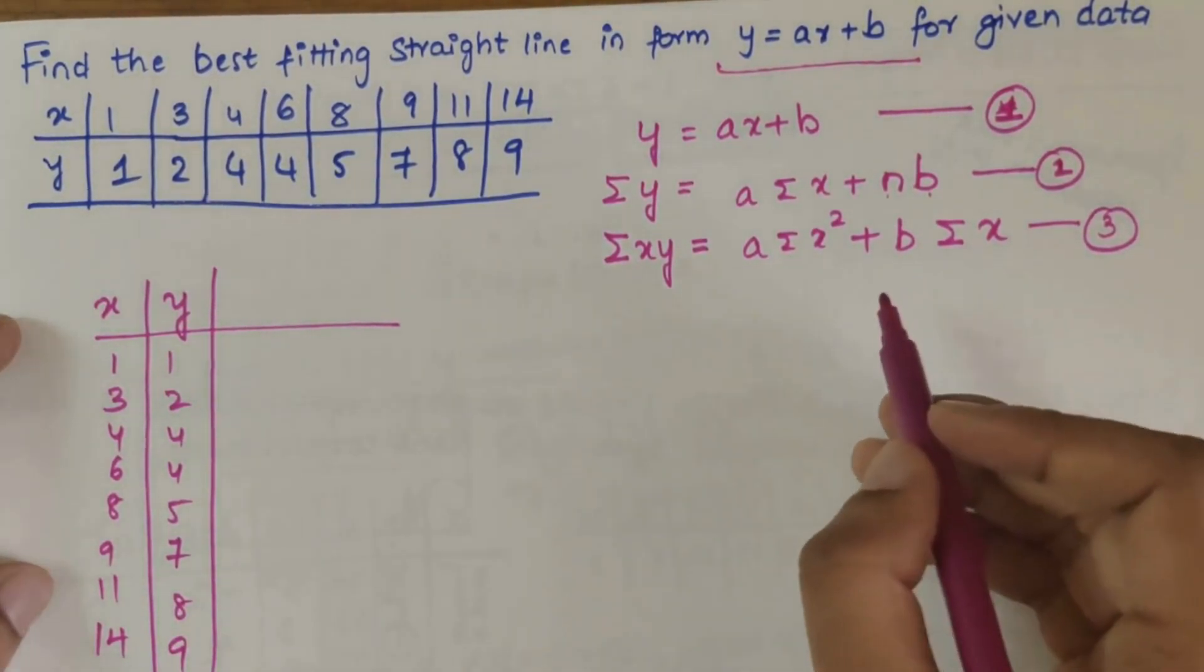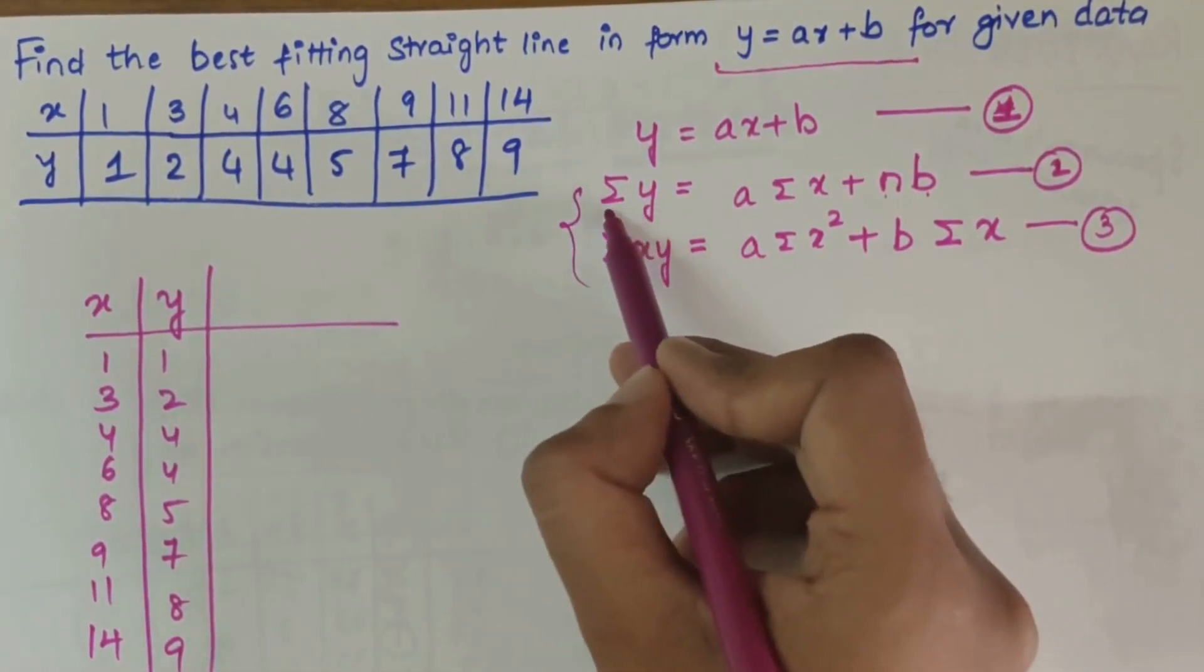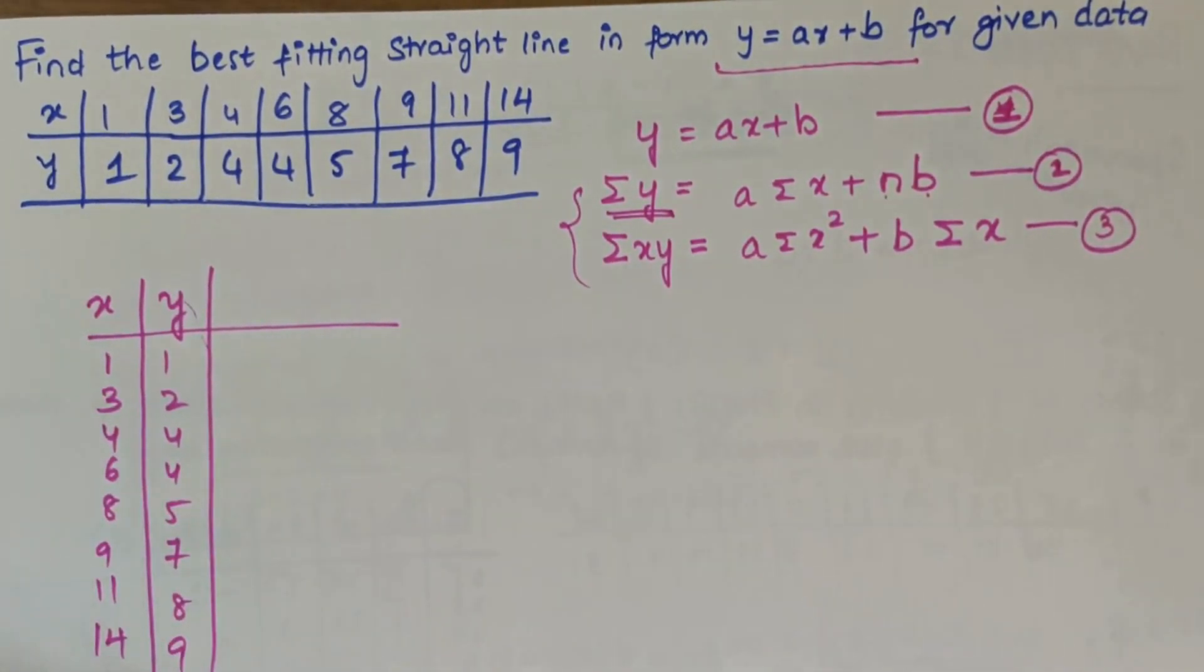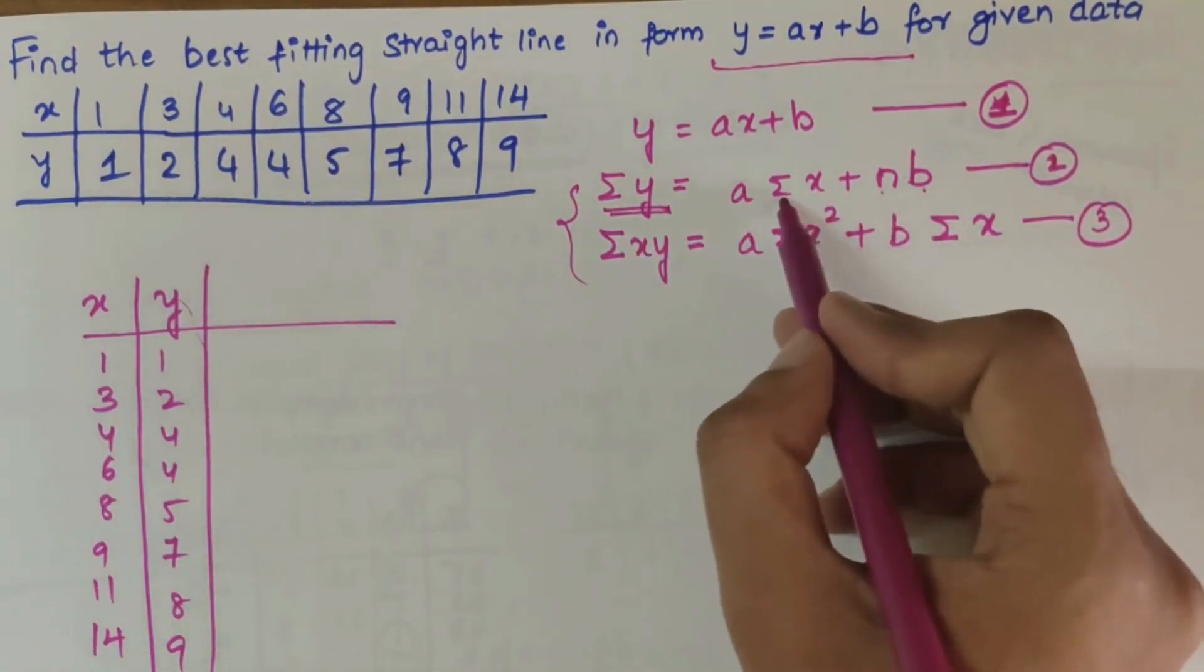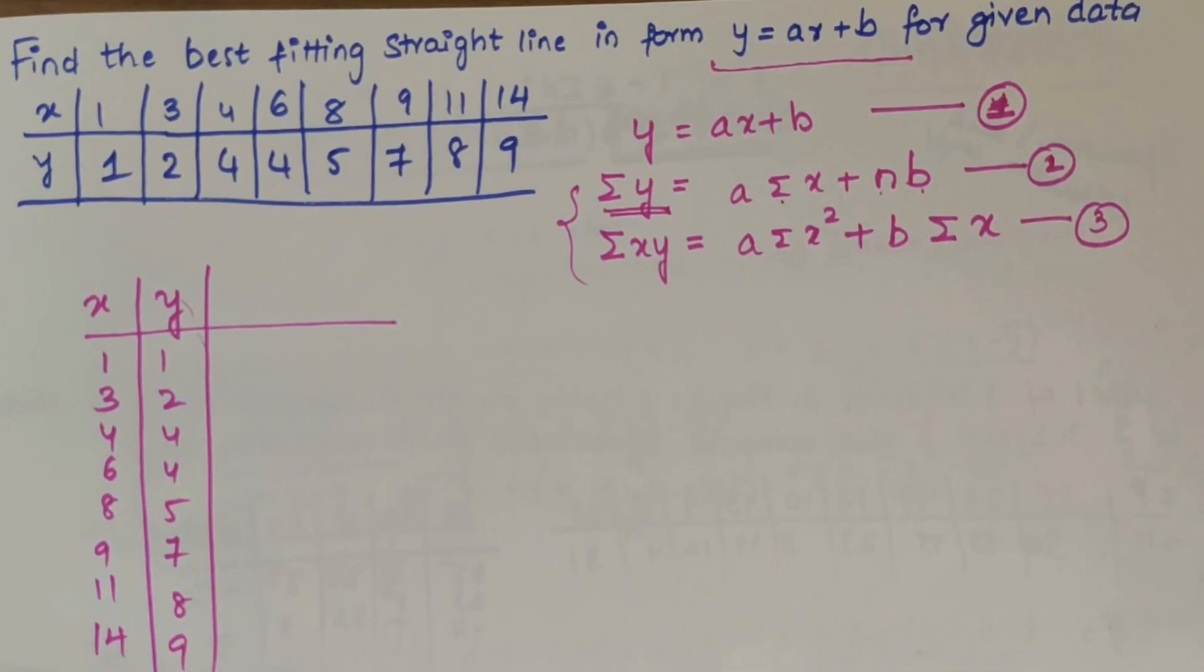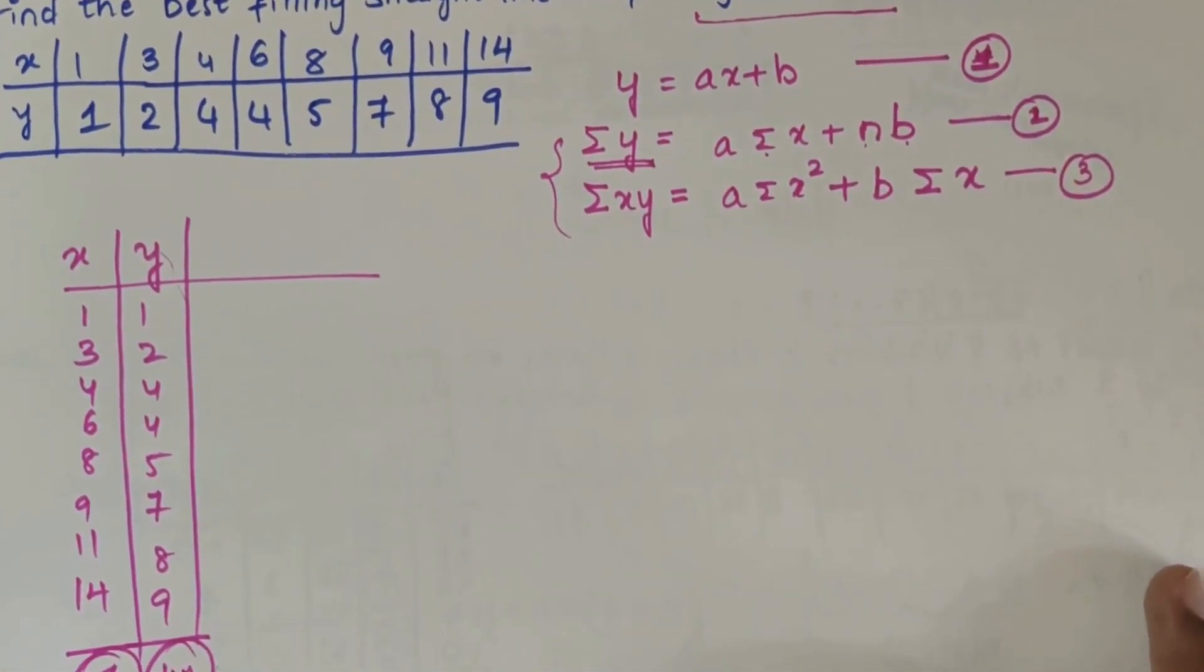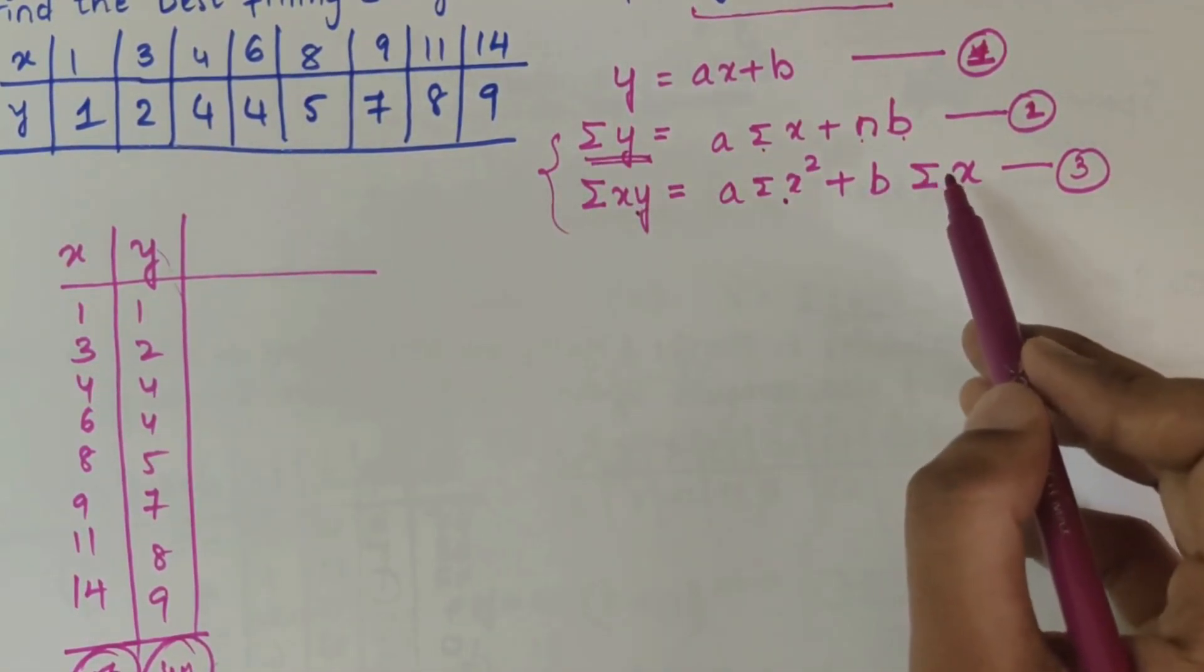After this, if you look at these two equations, we have to find summation y. If you add up all these values you will get 40. So summation y is 40. Summation x, if you add up all this, you will get 56. So summation x and summation y values we know.